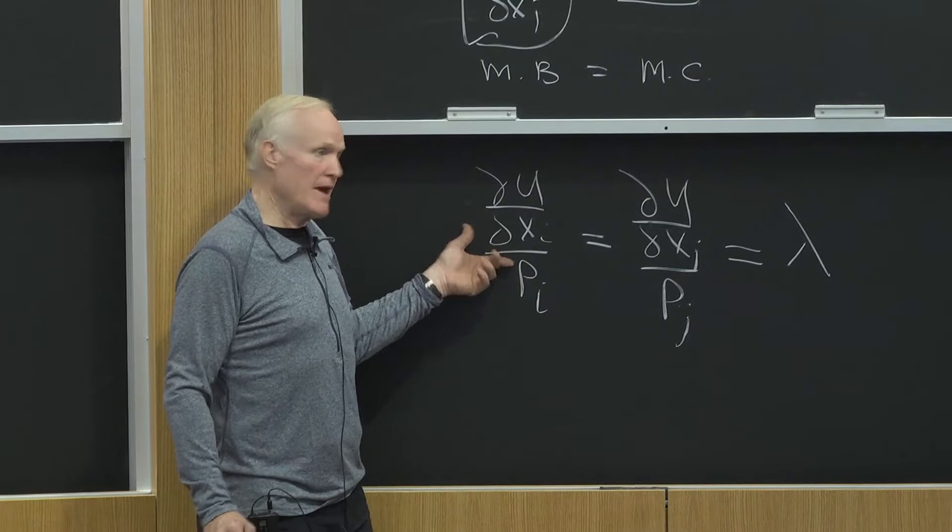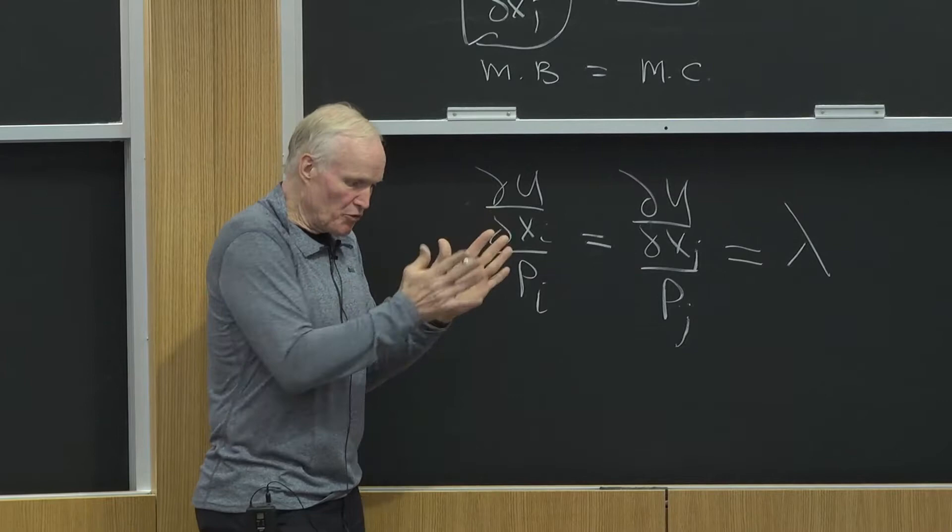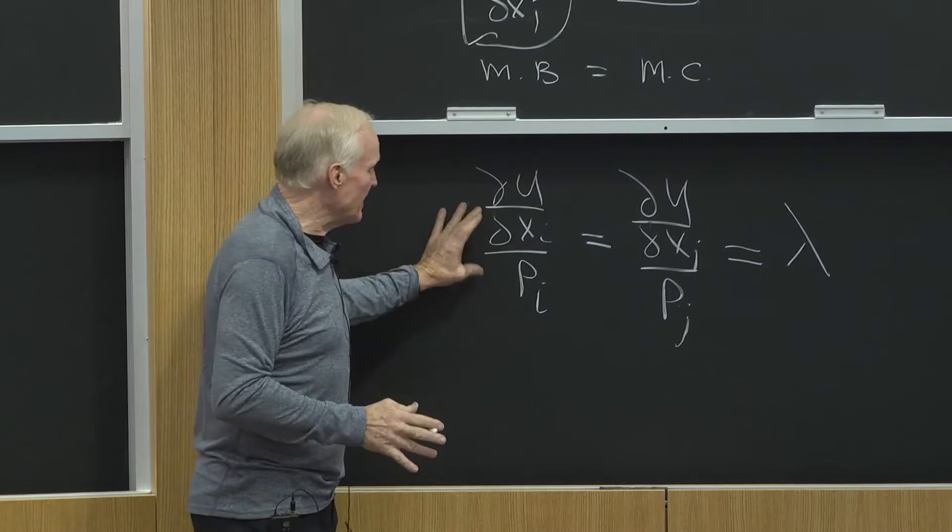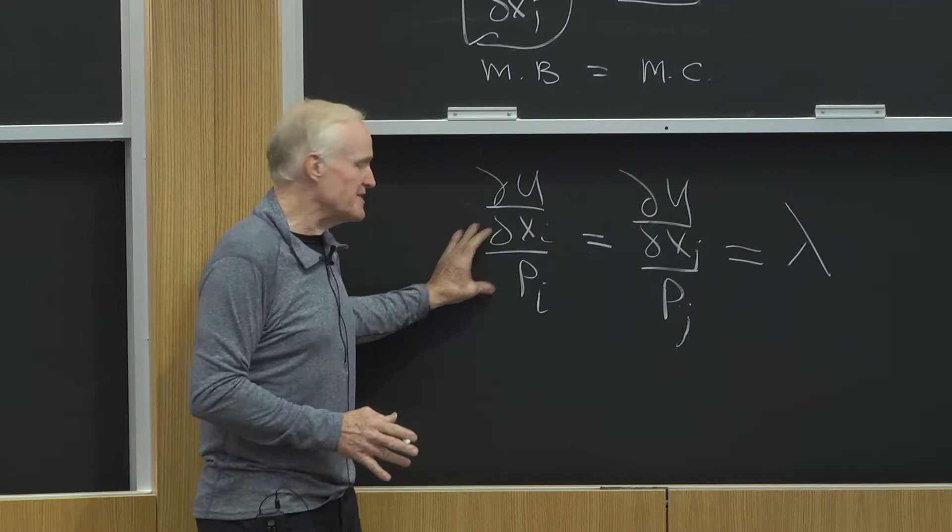the way we're finding an optimum is we're finding a point where all these equations hold. These are necessary conditions for being at the optimum. So in order to be at an optimum, it's got to be the case that the utility on the margin per dollar has to be the same for all the goods. But that makes sense.